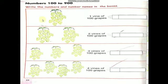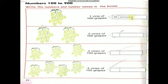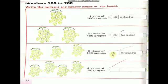Come to the next page — numbers 100 to 900. Write the numbers and the number name in the boxes. You can see grapes here. 1 vine of 100 grapes — 1 into 100 is 100 grapes. You have to write the number 100 and the number name: O-N-E H-U-N-D-R-E-D. Come to the next one — 2 vines of 100 grapes, 2 into 100 is 200. Write 200 and its number name. Next — 3 vines of 100 grapes, 3 into 100 is 300. Number name: T-H-R-E-E H-U-N-D-R-E-D. You can write the number name 300.